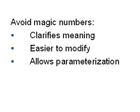Some of the reasons you would want to avoid magic numbers like this is that it clarifies the meaning. So when you see 1, you don't know what it means, but if we were to rename that as a variable radius, you would understand what that number meant.